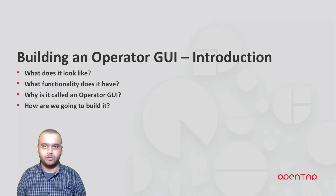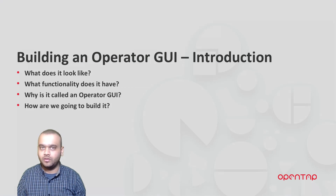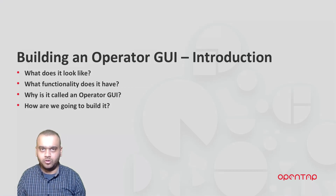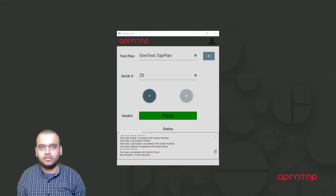In this first intro video, we are going to be looking at what the operator GUI looks like and what its functionality is. We will then discuss why it is called an operator GUI. Finally, we will go into a brief overview of how we are going to be building this and how this series is going to be structured. In the next videos, we will get started with the code. So let's take a look at the GUI.